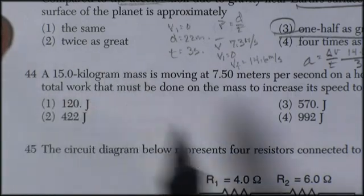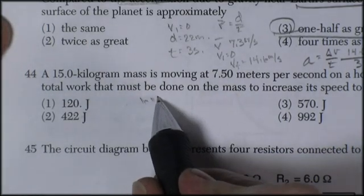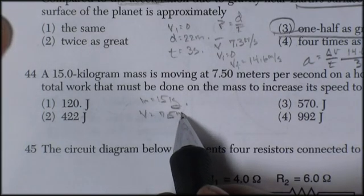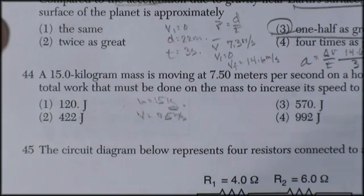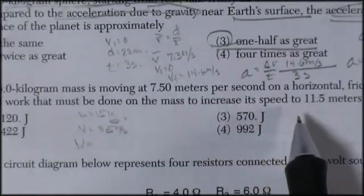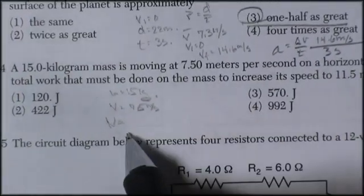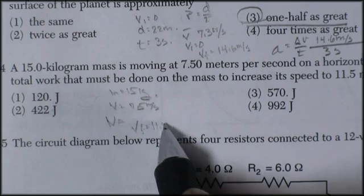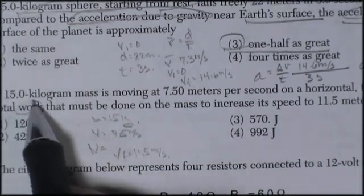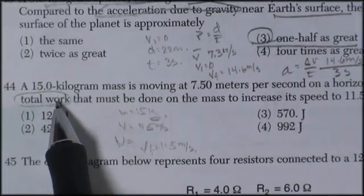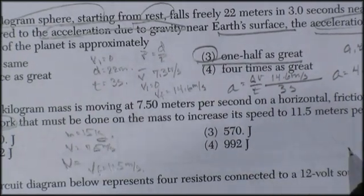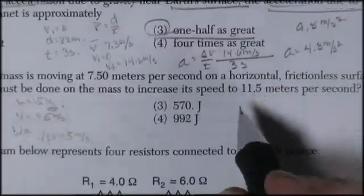Question 44. A fifteen kilogram mass, mass is fifteen kilograms. It's moving at a velocity of 7.5 meters per second on a horizontal frictionless surface. What total work must be done to the mass to increase its speed to 11.5 meters per second? So velocity final is 11.5 meters per second. Well, I'm going to do it using energy. Energy, the ability to do work. A change in work is a change in energy. So I'm going to do kinetic energy before and kinetic energy after. And the difference will be the work I had to do.